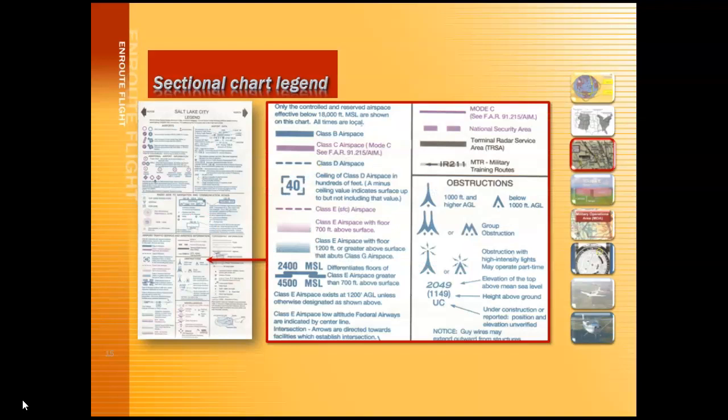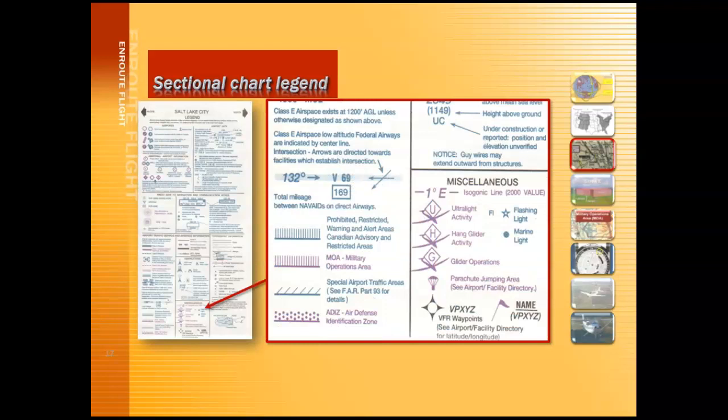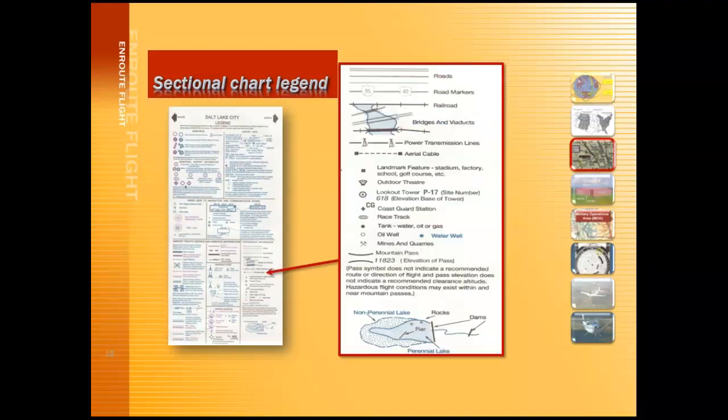You can also find different symbols for the different airspace shown on the sectional chart — how to identify each type of airspace like Class Bravo or Class Charlie, how to determine the ceiling of the airspace, and different obstructions and their symbols. There's also help for identifying special use airspace like prohibited or restricted areas, and miscellaneous symbols for ultralight activity, hang glider activity, parachute jumping areas, power lines, bridges, railroads, road markers, and racetracks. These are the types of symbols you'll want to identify because some make good checkpoints or landmarks for navigation.